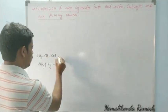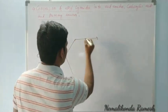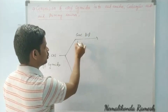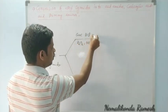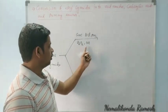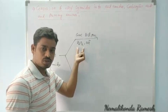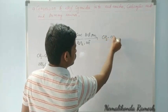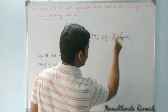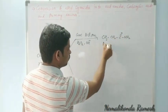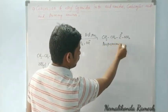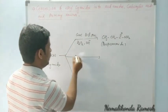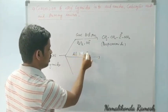With concentrated hydrochloric acid or alkaline hydrogen peroxide, ethyl cyanide can be converted to CH₃CH₂C(=O)NH₂, which is propanamide. This product is an acid amide and is formed under partial hydrolysis conditions.